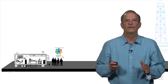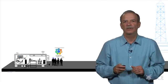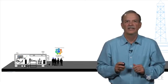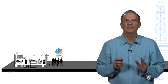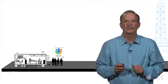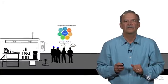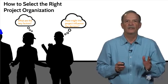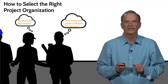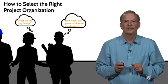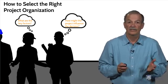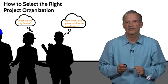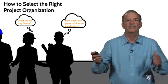In the last lesson, we examined different types of project organizations and the advantages and disadvantages of each. Now we want to take a look at how we select the project organization for our project. In this lesson, we'll examine how to select the appropriate organization for your project, which factors may govern this choice, and how the project type and size might influence this choice. With that in mind, let's get started.